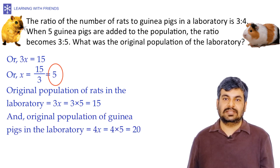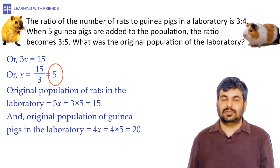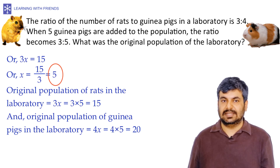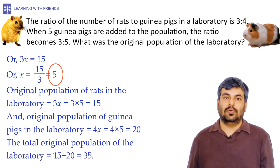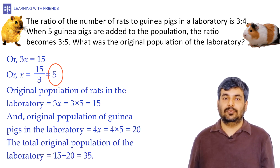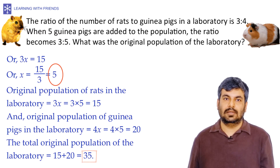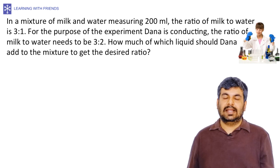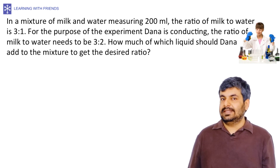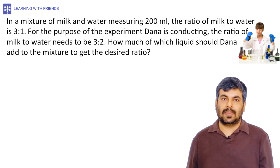The original population of rats was 3x = 3 × 5 = 15, and the original population of guinea pigs was 4x = 4 × 5 = 20. Therefore, the total original population of the laboratory was 15 + 20 = 35.